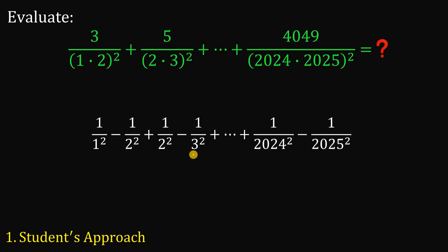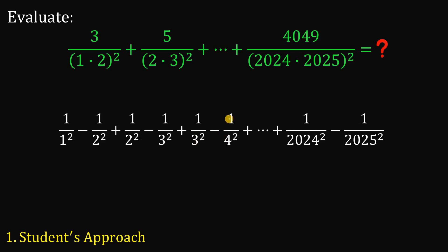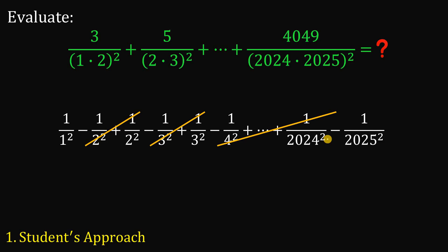Let's focus on this result and take note of this part. We have terms like 1 over 3 squared minus 1 over 4 squared, and so on. We can eliminate negative 1 over 2 squared and positive 1 over 2 squared — that's zero. Negative 1 over 3 squared and positive 1 over 3 squared is also zero. In fact, we can eliminate from negative 1 over 2 squared all the way to positive 1 over 2,024 squared. A lot of terms cancel out, leaving only 1 over 1 squared and negative 1 over 2,025 squared.